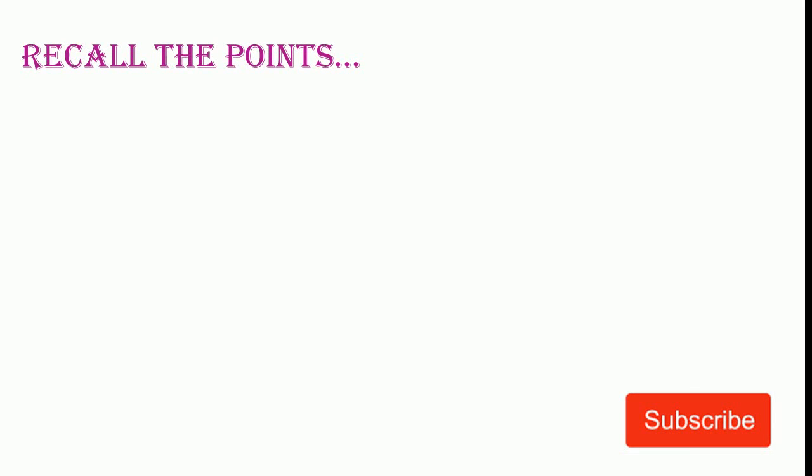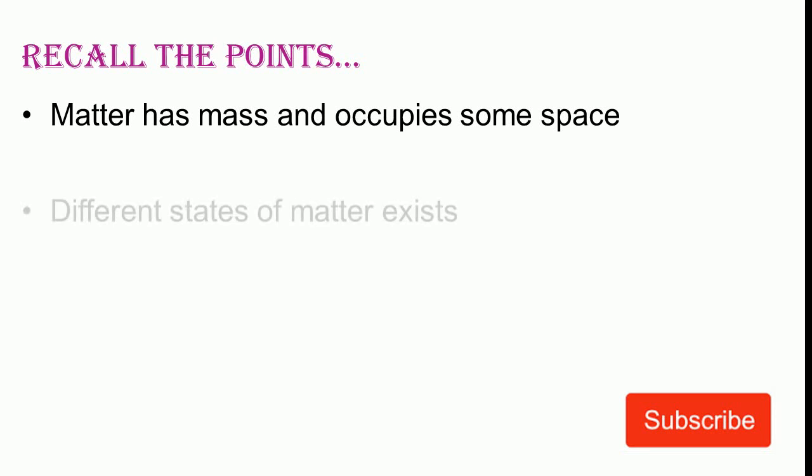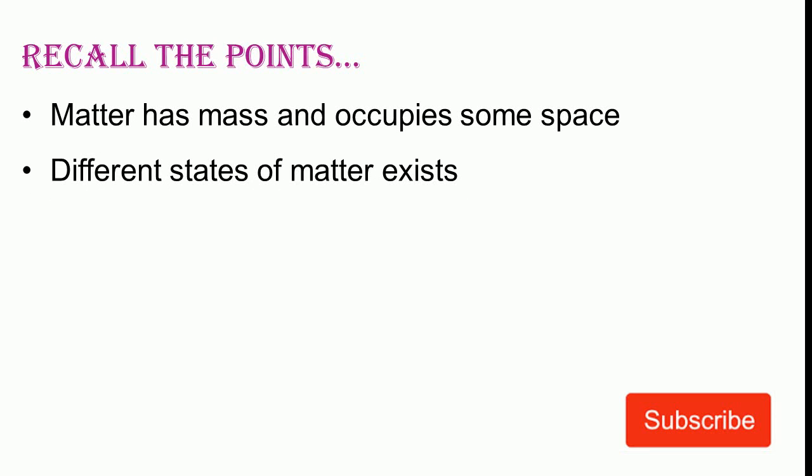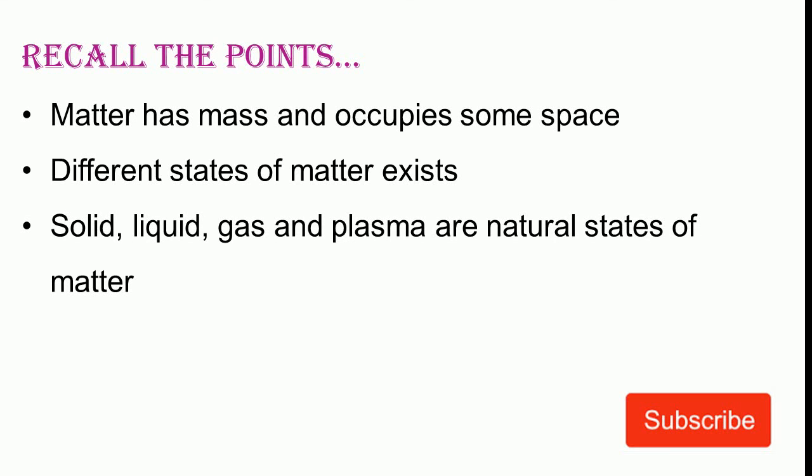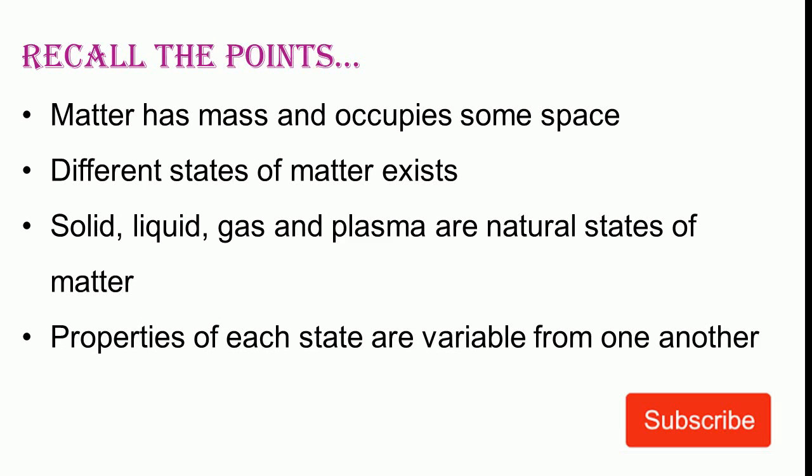Recall the points: Matter has mass and occupies some space. Different states of matter exist. Solid, liquid, gas, and plasma are the natural states of matter. Properties of each state are variable from one another. Thank you.